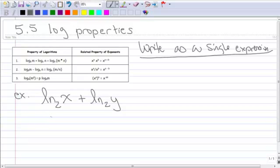If these are added together and if the bases are the same, then I can write this as one log. And of course it's going to be base 2, and then I'm simply going to take the x and multiply it with the y. So that's writing it as one log.